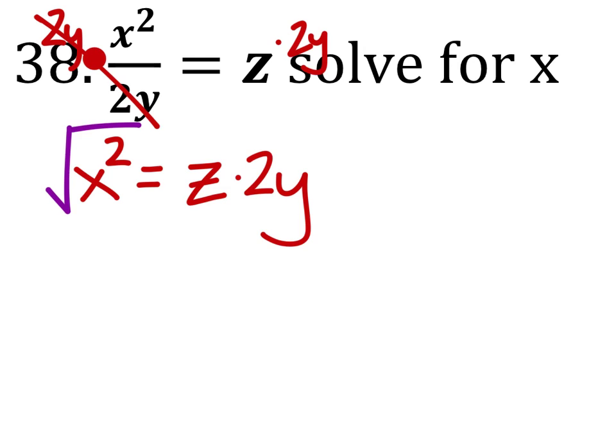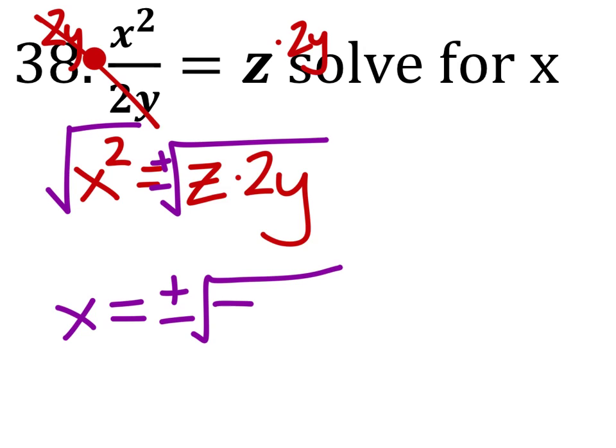Now we're going to take the square root of both sides and we get x equals, since it's a square, it's going to take the plus or minus. We have the positive or negative value of z times 2y.